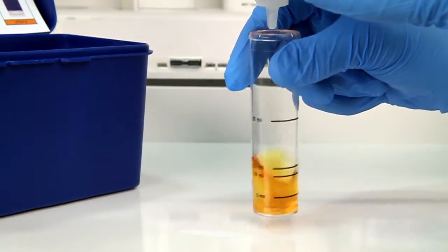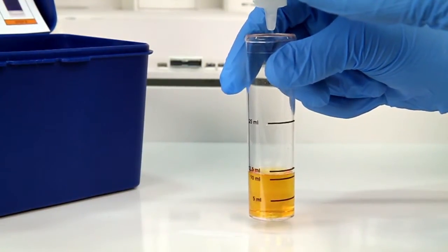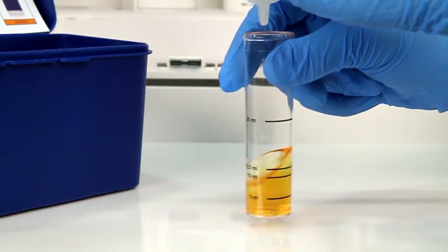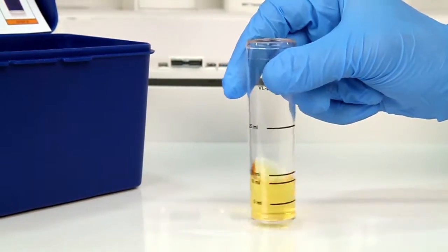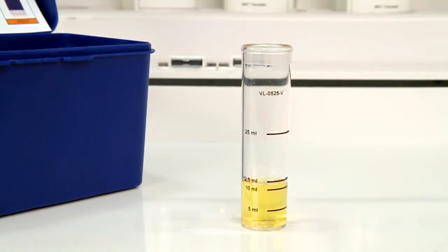The titration is complete when the sample turns a pale yellow color. Write down the number of drops used. You will need this number to calculate your results at the end.